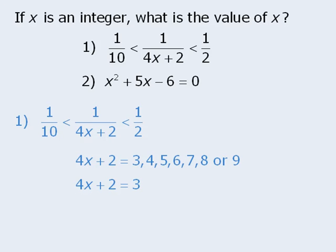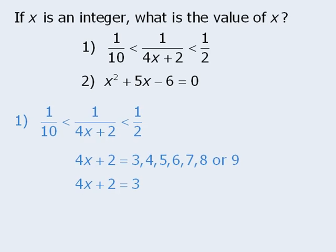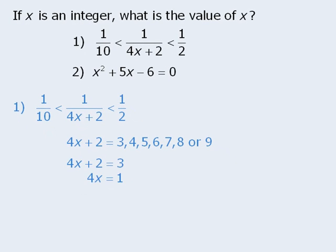Let's see what happens if we let 4x plus 2 equals 3. When we solve this equation for x, we get x equals 0.25. Now the question tells us that x must be an integer, which means 4x plus 2 cannot equal 3, since this yields a value of x that is not an integer.